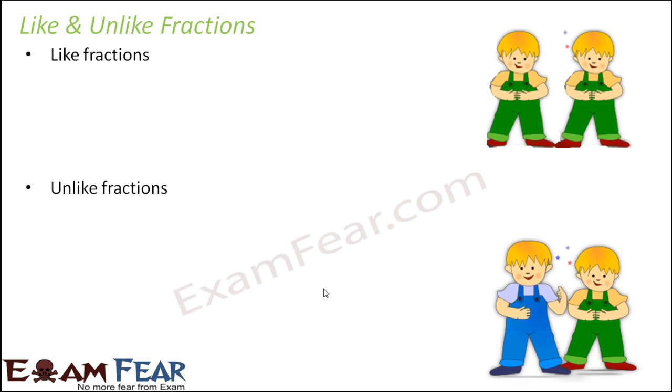Like how you see here, two twins who are wearing exactly the same dress, so they are like each other. Whereas two brothers who are slightly younger and elder, so they are not exactly like each other.